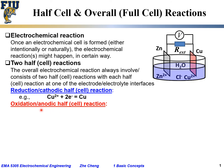On the other hand, another half-cell reaction is called the oxidation or anodic half-cell reaction. For this copper-zinc electrochemical cell, zinc metal becomes zinc ion and releases two electrons. In this anodic half-cell reaction, the zinc metal gets oxidized, releases electrons, and becomes zinc ion — the valence increases.